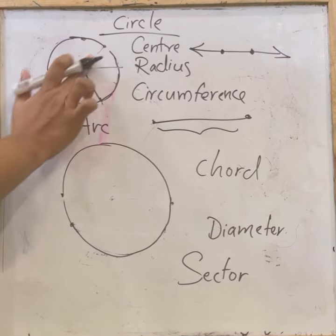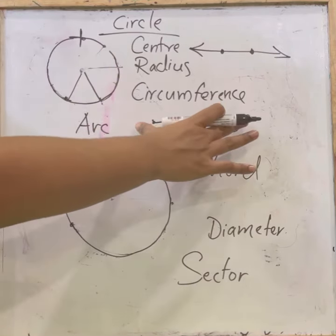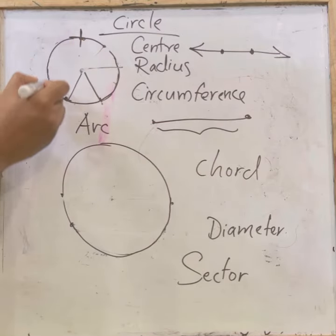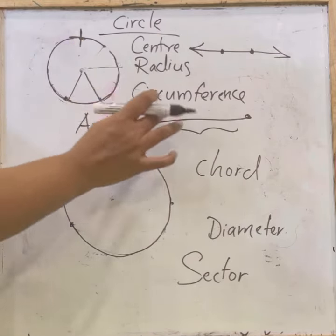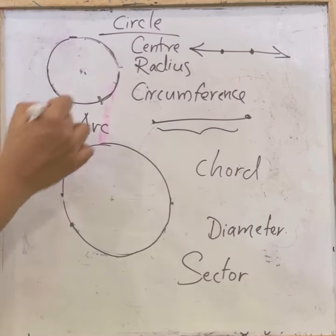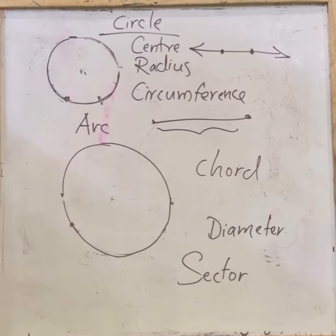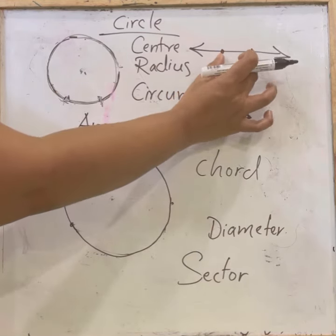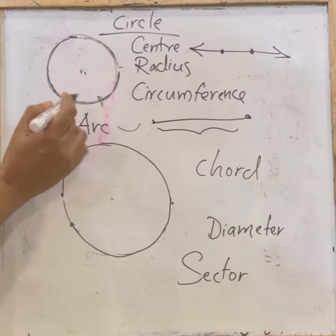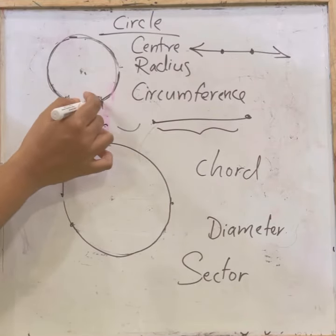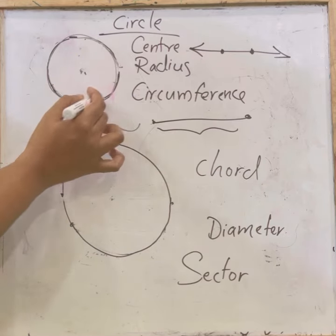Coming to circumference, it is the perimeter of the circle. If we cut the circle, open it and keep it as a straight line, that total length is called the circumference. Next, coming to arc — if there are two points on a circle, the piece between them is called an arc. The smaller piece is the minor arc and the bigger piece is the major arc.